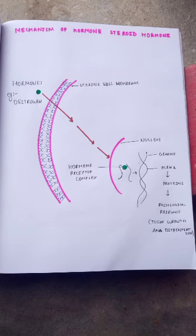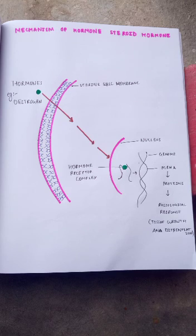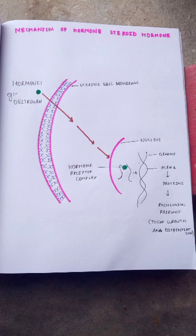Here we can see the mechanism of hormone action in steroid hormones. A hormone like estrogen directly enters through the uterine cell membrane and forms the hormone-receptor complex in the nucleus. There, mRNA is produced and converted into proteins, resulting in physiological responses such as tissue growth and differentiation.